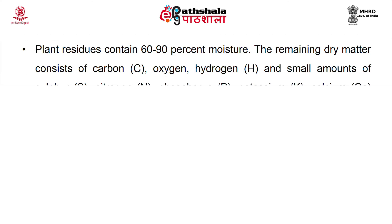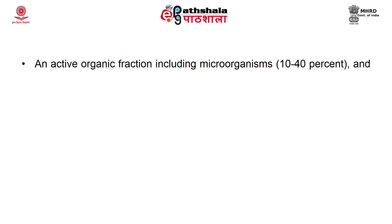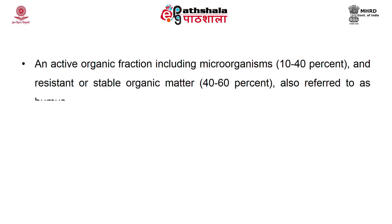Plant residues contain 60 to 90 percent moisture. The remaining dry matter consists of carbon, oxygen, hydrogen, nitrogen, phosphorus, potassium, calcium, and magnesium. Although present in small amounts, these nutrients are very important from the soil fertility point of view and for soil management. Soil organic matter consists of a variety of components, including active organic fractions with microorganisms and resistant or stable organic matter, also referred to as humus.